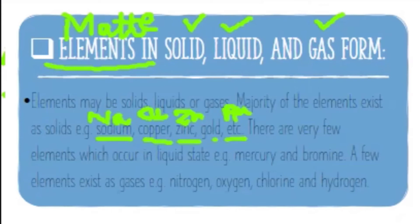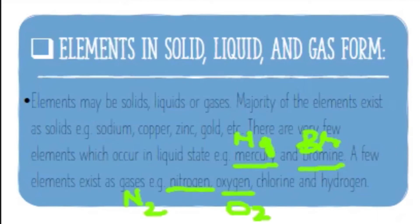Liquid form elements include mercury (symbol Hg) and bromine (symbol Br). Some elements exist in gas form like nitrogen N2, oxygen O2, and chlorine. If you write Cl single, it will be considered an atom. Cl2 will be considered an element because there are two atoms of chlorine. Hydrogen is H2.